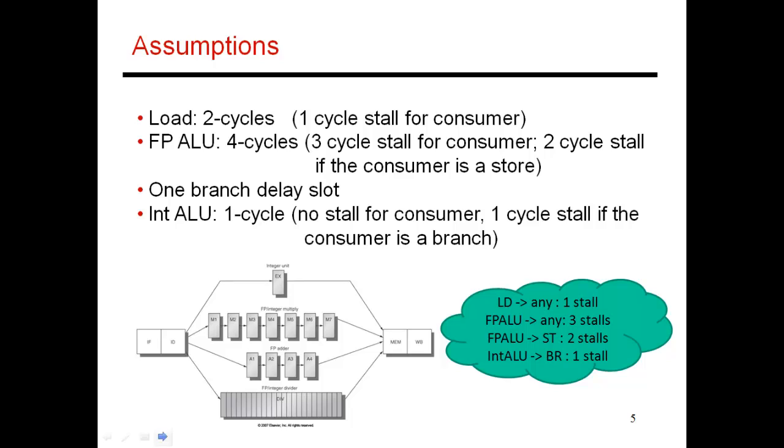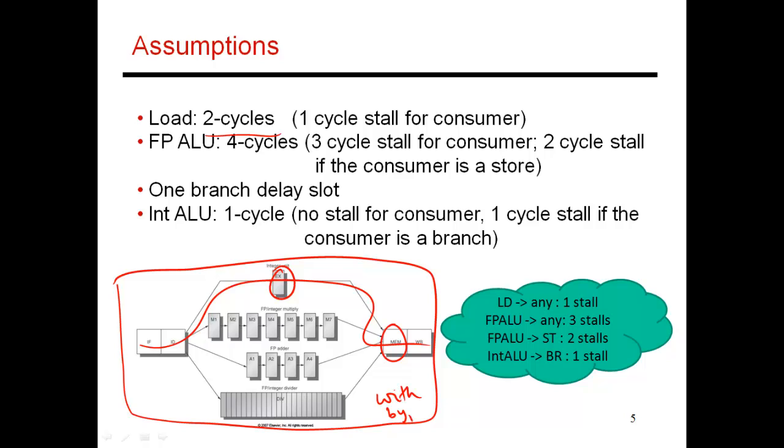What assumptions am I going to make before diving into these examples? We're going back to this processor that we discussed in an earlier video. In this case, the load goes through this path over here. It takes essentially two cycles worth of work, where one cycle is spent calculating the address in this stage and one cycle is spent accessing the data memory in the second stage. I'm going to assume that this processor has bypassing in it. Accordingly, if there's a consumer coming right behind the load, it's going to experience one stall cycle.